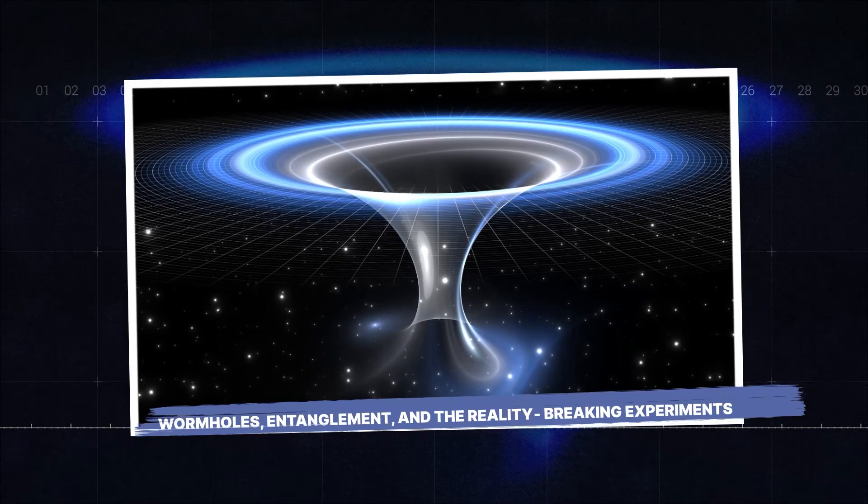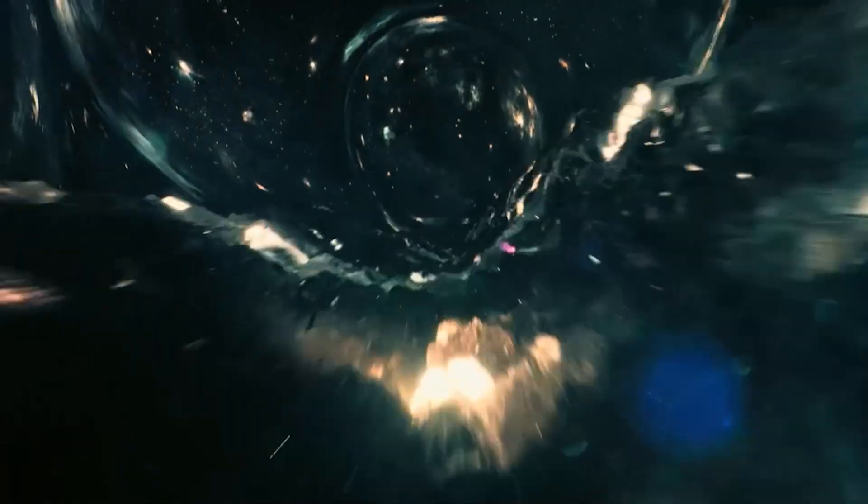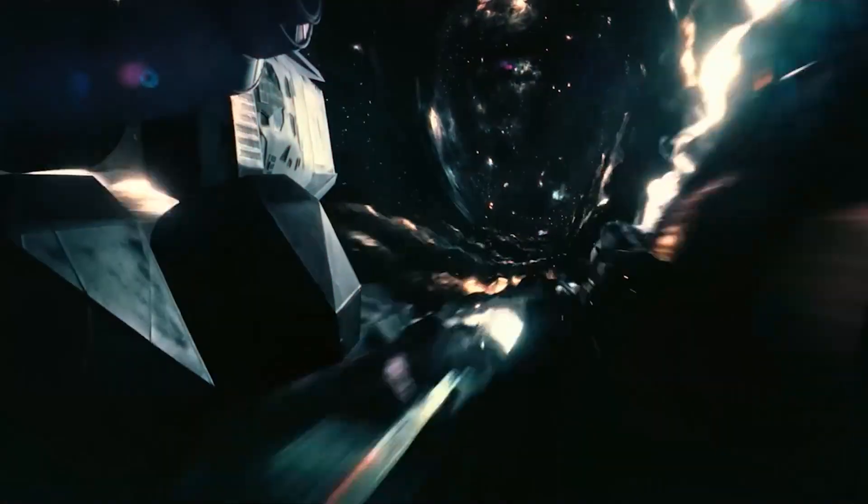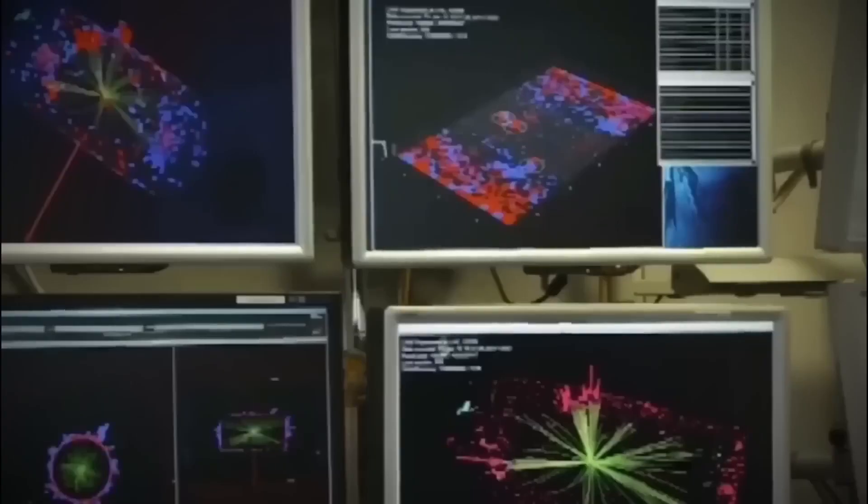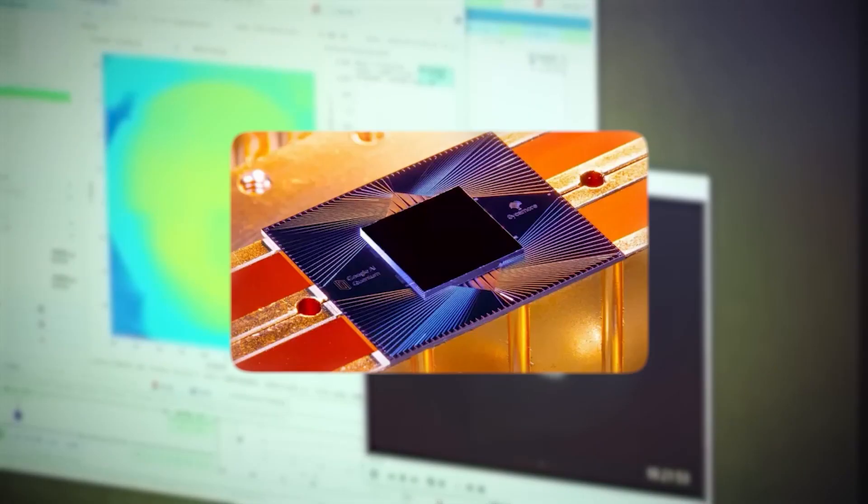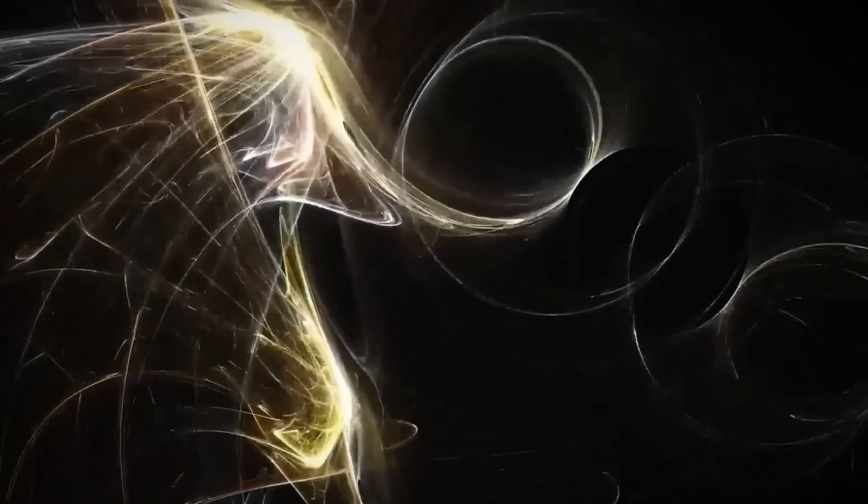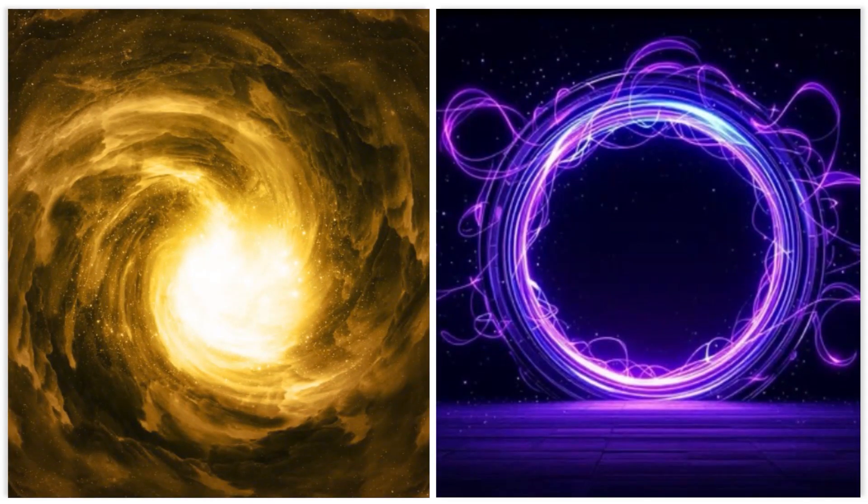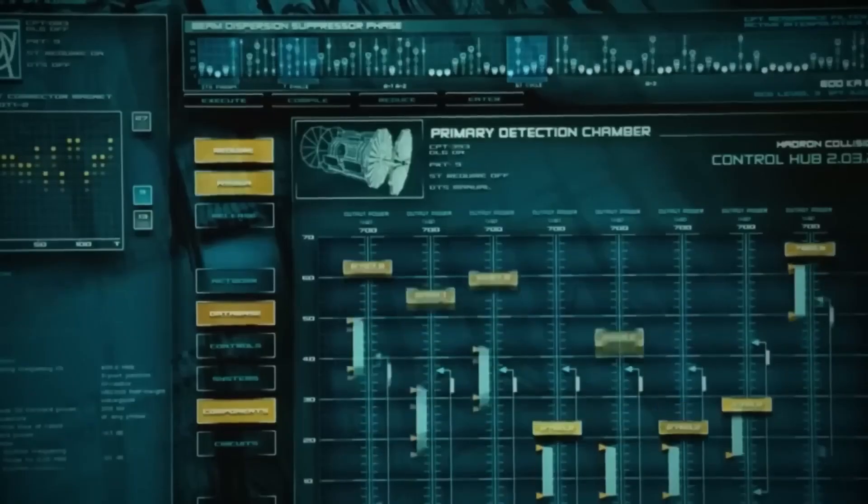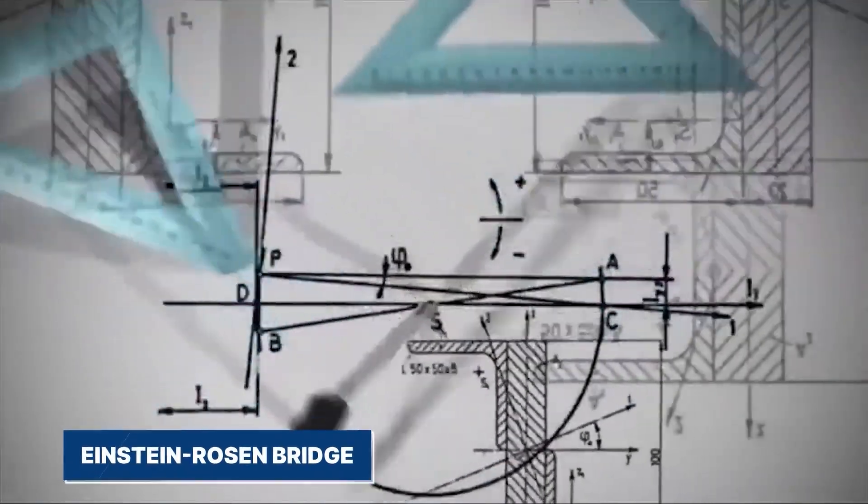Wormholes, entanglement, and the reality-breaking experiments. Remember the wormhole scene in Interstellar? That jaw-dropping moment when the ship bends through space and emerges light-years away in an instant. Now imagine recreating that inside a quantum computer. In late 2022, researchers at Google and Caltech did something that sounds ripped straight from science fiction. Using their Sycamore processor, a small but powerful array of entangled qubits, they simulated a traversable wormhole. No spinning vortex, no glowing portal. But mathematically, it behaved just like an Einstein-Rosen bridge.